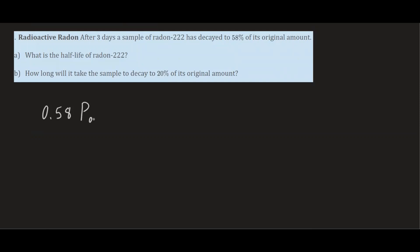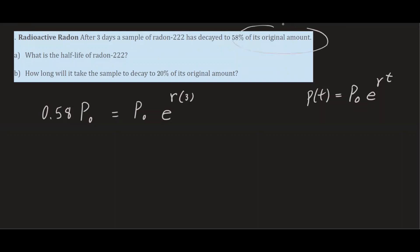So 0.58·P₀ equals P₀·e^(r·T), using the model P(T) = P₀·e^(rT). We know the amount has decayed to 58% of its original when T = 3, so this setup will help us find r.